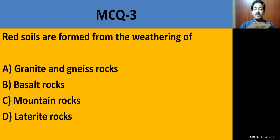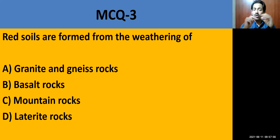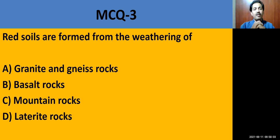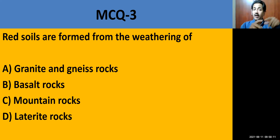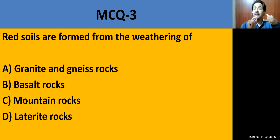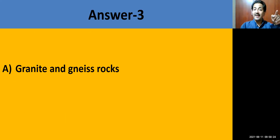MCQ question number 3: Red soils are formed from the weathering of — granite or gneiss rock, basalt rock, mountain rocks, or laterite rock? Soil is a thin surface layer of the earth's crust, formed due to disintegration and weathering of various rocks. The correct answer is granite and gneiss rock.